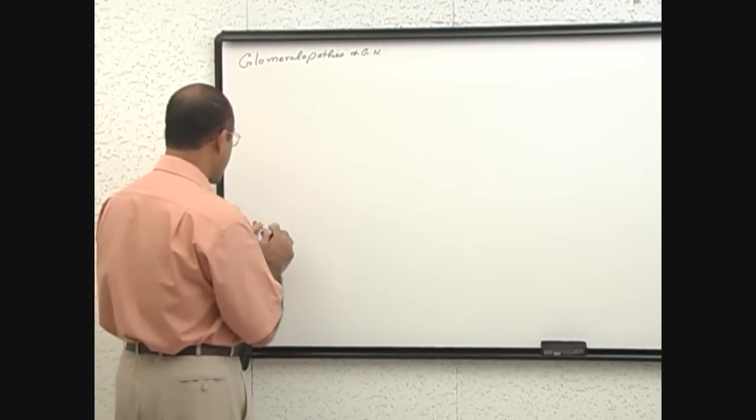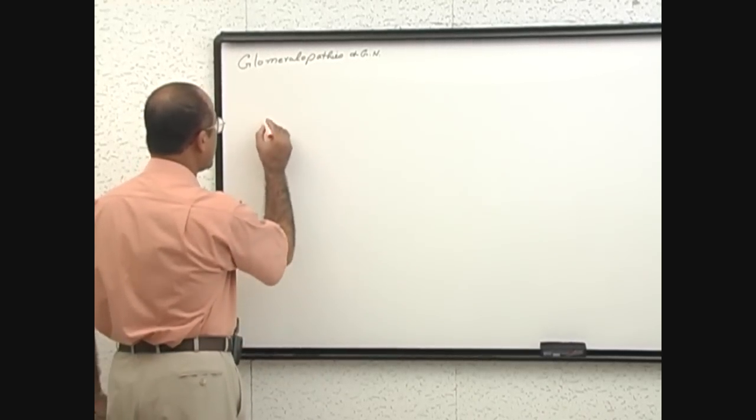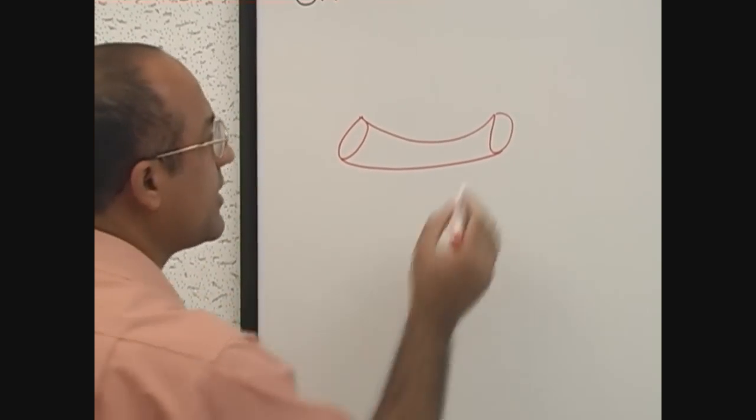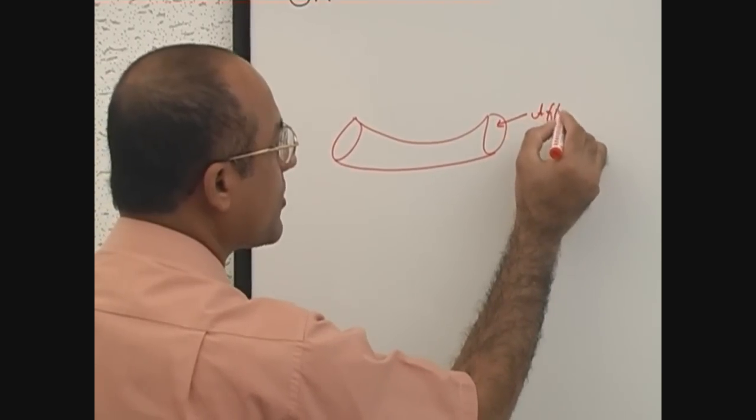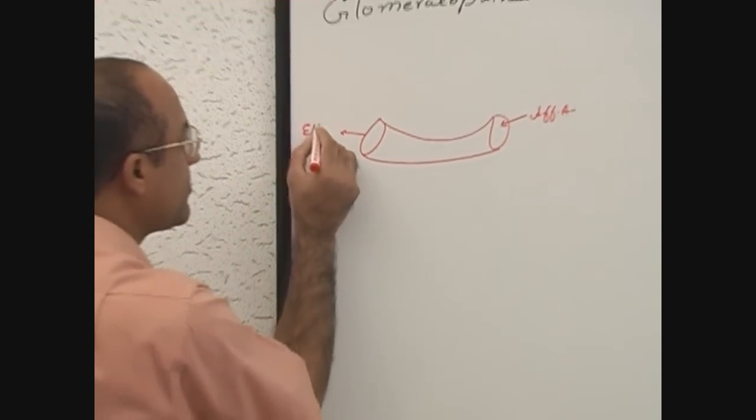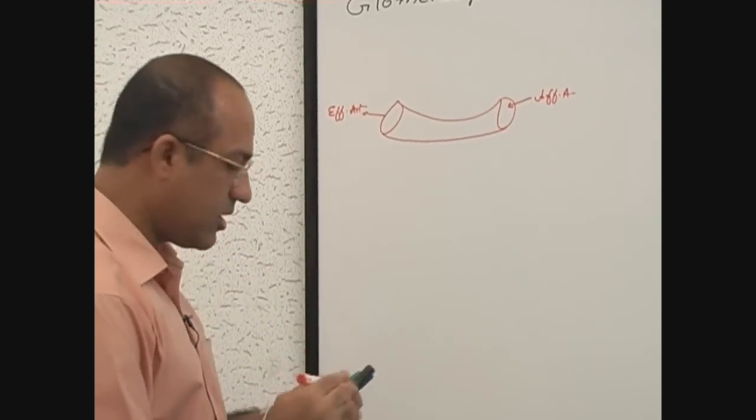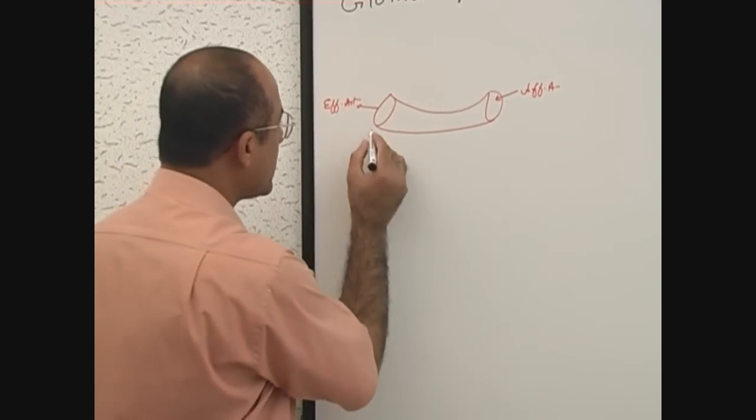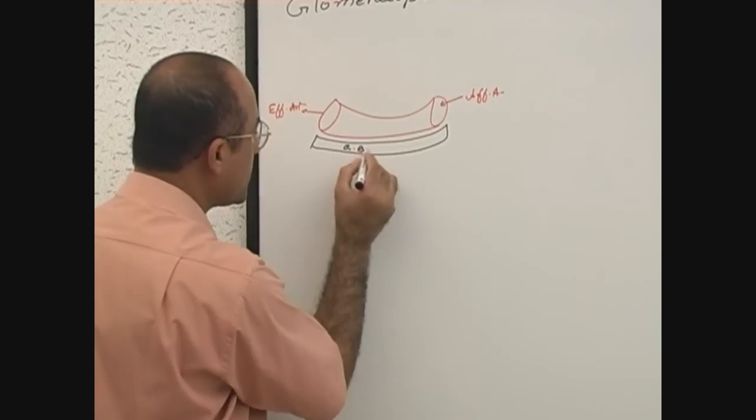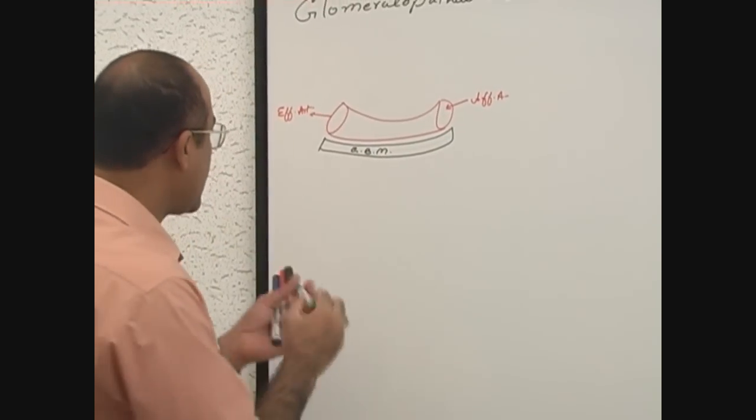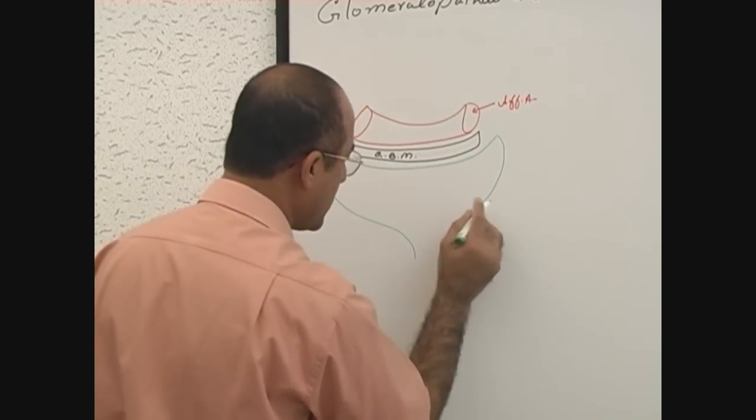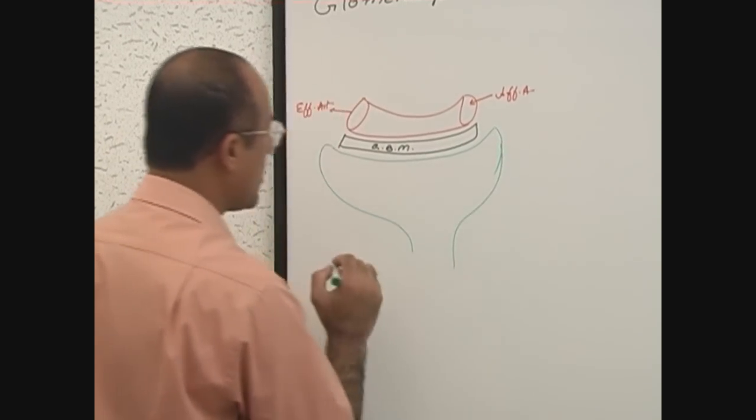Let's suppose this is glomerular capillary. Here the blood is coming from afferent arteriole, here the blood is going out to efferent arteriole, and here is your glomerular basement membrane, GBM. And here is your Bowman's capsule or urinary space.